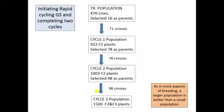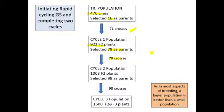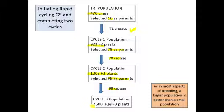Here's information from my program. We started with a training population of 470 lines. 16 were selected and used as parents; we made 71 crosses amongst them and selfed the F1s. We had 922 F2 plants — each one genotyped and predicted. We selected 78 and made 78 crosses. From those, we got F1s, selfed them, and got 1,003 F2 plants that were then genotyped and predicted. We selected 98 with the most desirable traits, made 98 crosses, got F1s, selfed them, and ended up with 1,500 F2 and F3 plants — all genotyped, and on we go.